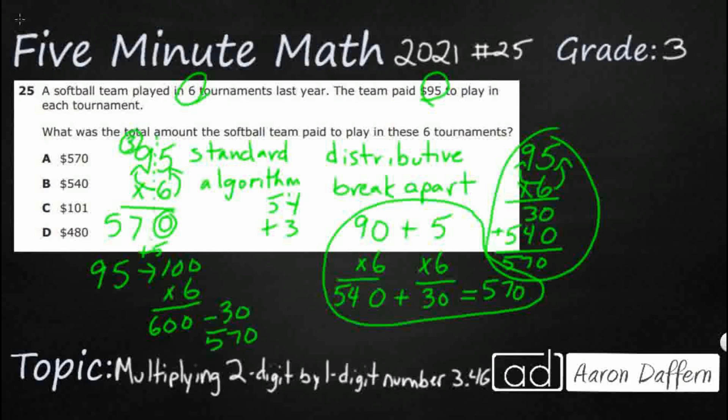Or you could have just estimated your 600 and said, you know what? The only one that's really close to 600 is this A, 570. And you would have been correct. So that is many different ways that you can multiply two-digit by one-digit numbers.